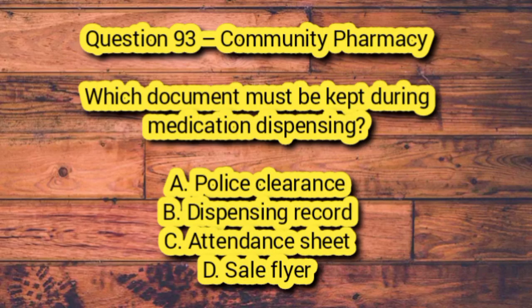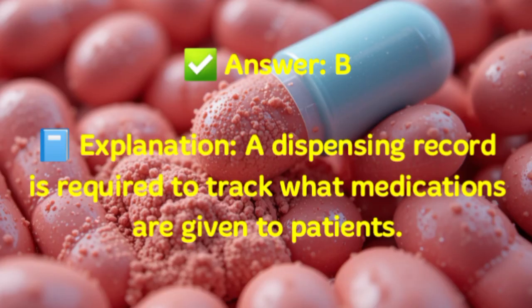Question 93 – Community Pharmacy. Which document must be kept during medication dispensing? A. Police clearance. B. Dispensing record. C. Attendance sheet. D. Sale flyer. Answer: B. Explanation: A dispensing record is required to track what medications are given to patients.